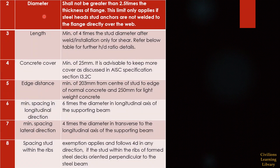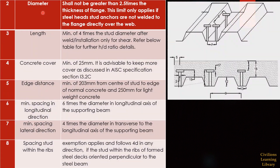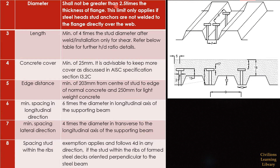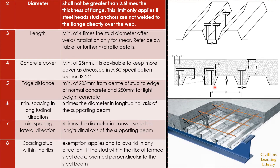The next condition is for the diameter of the shear stud. The diameter of the shear stud should not be more than 2.5 times the thickness of the flange, as shown in the image. The minimum length of the shear stud should be 4 times the stud diameter.